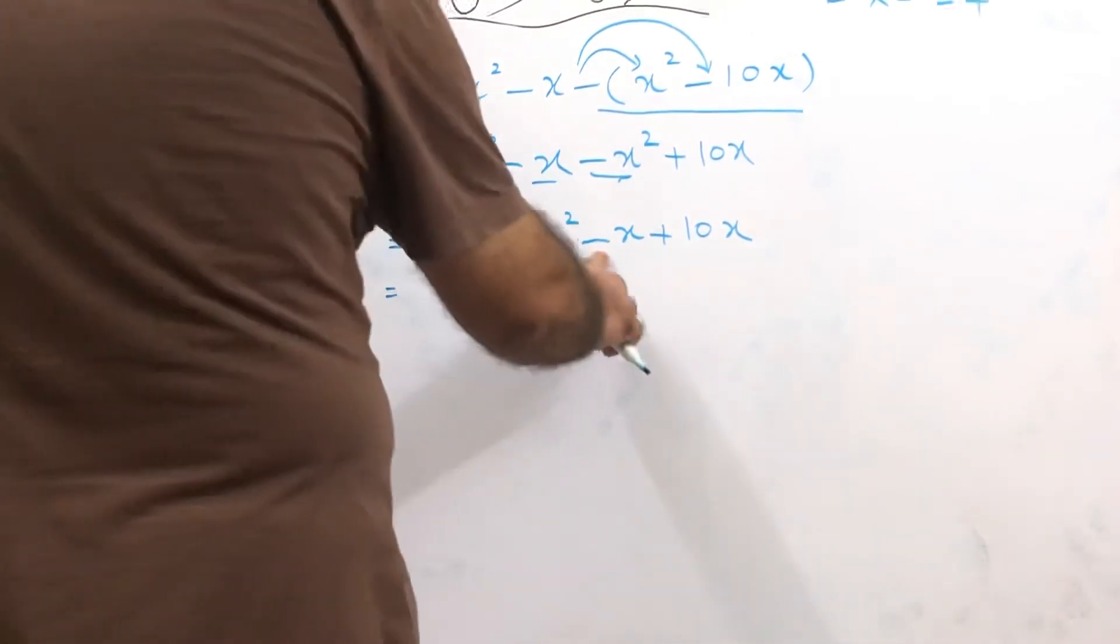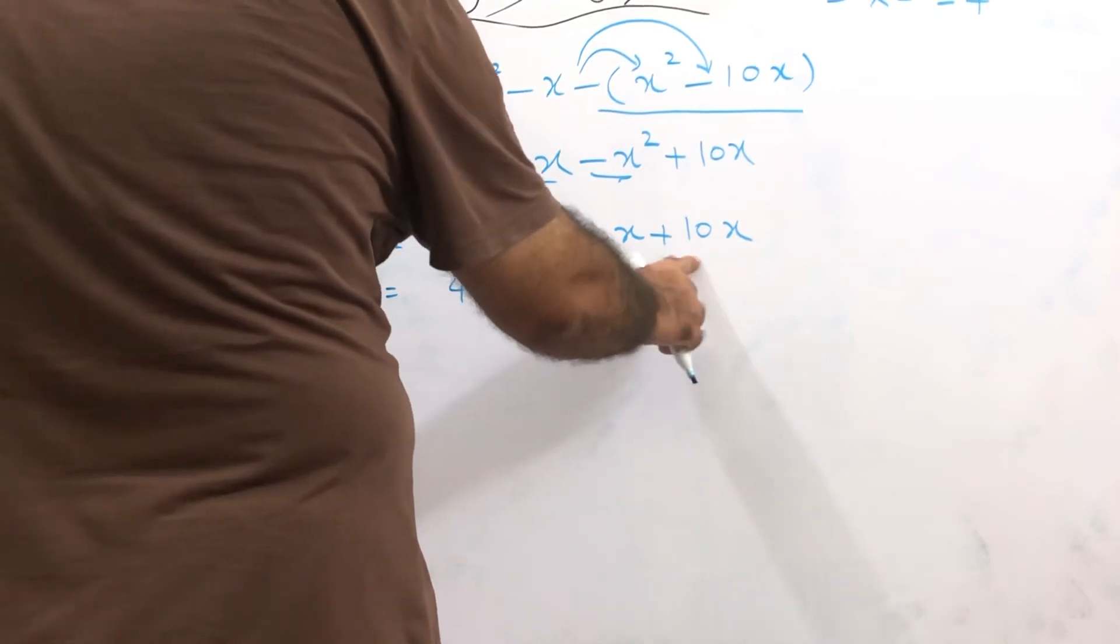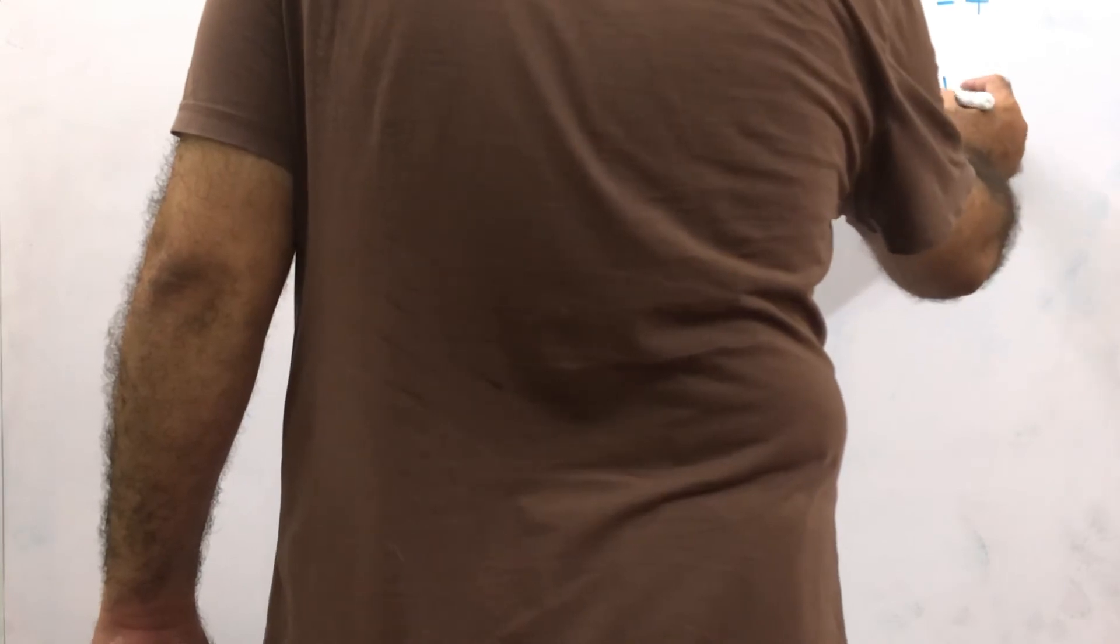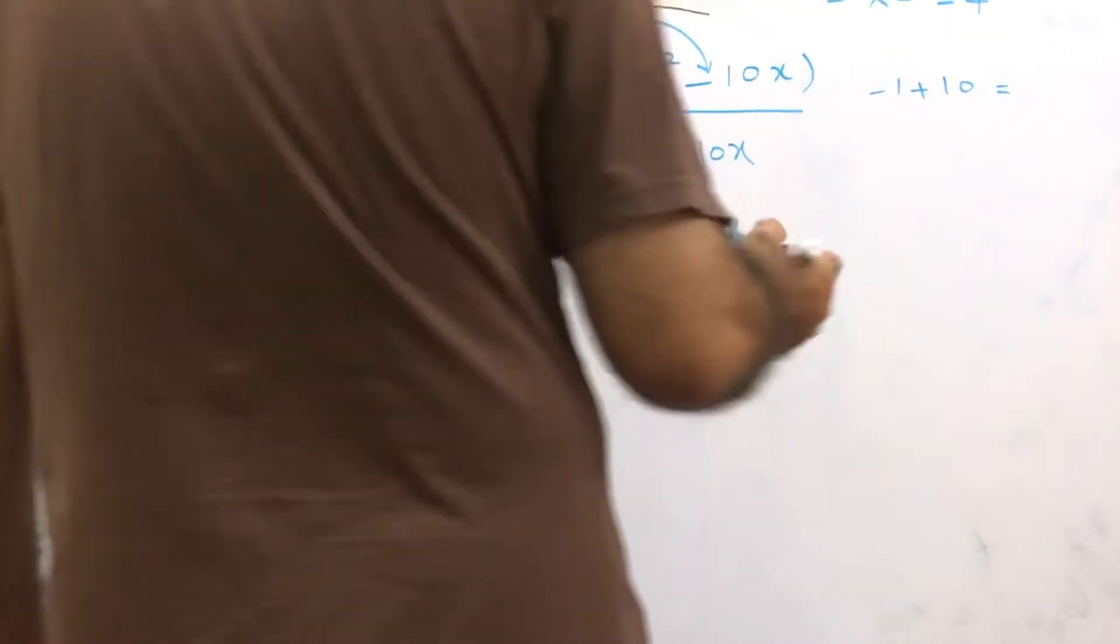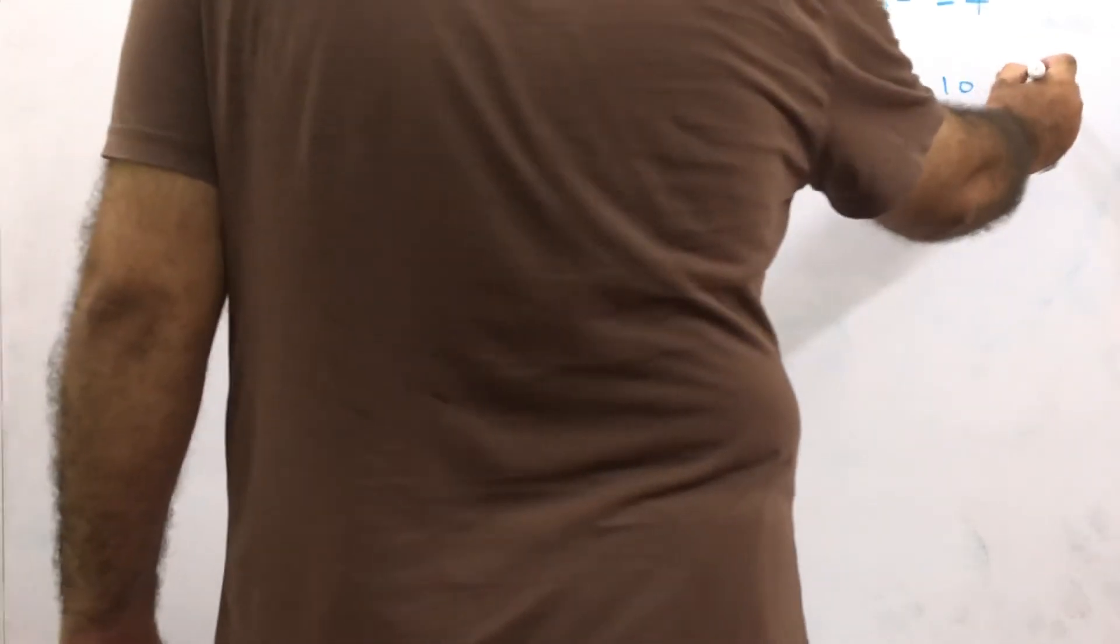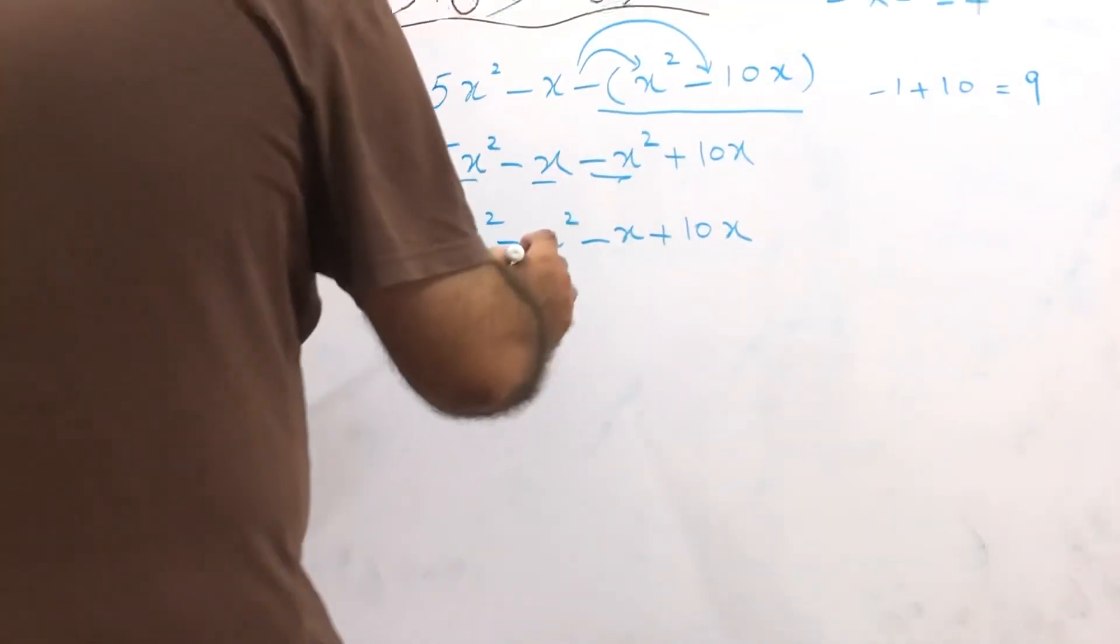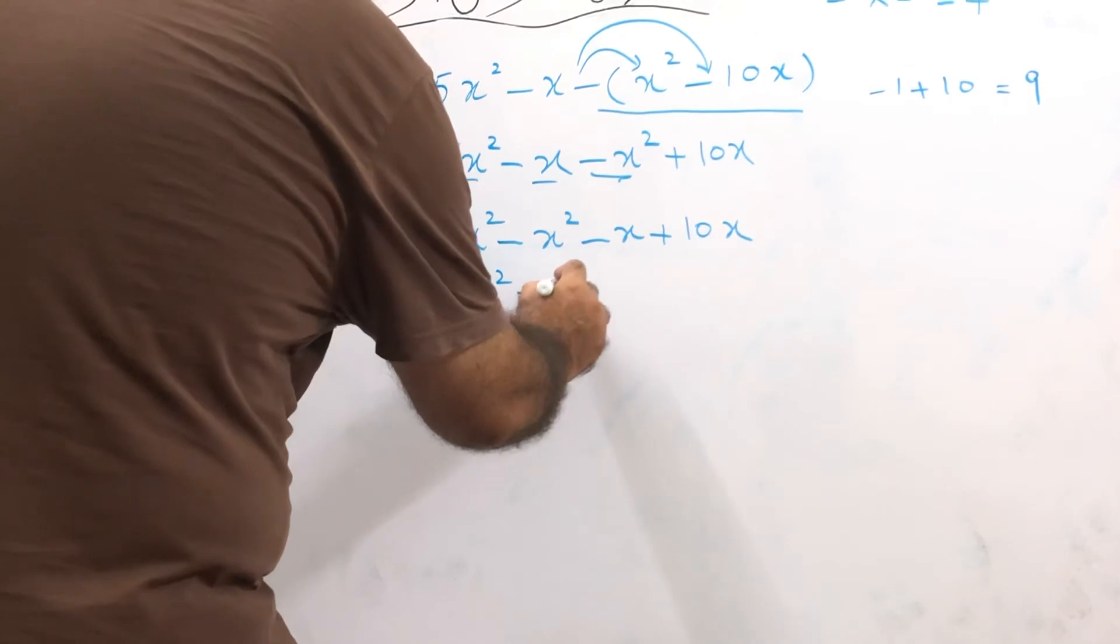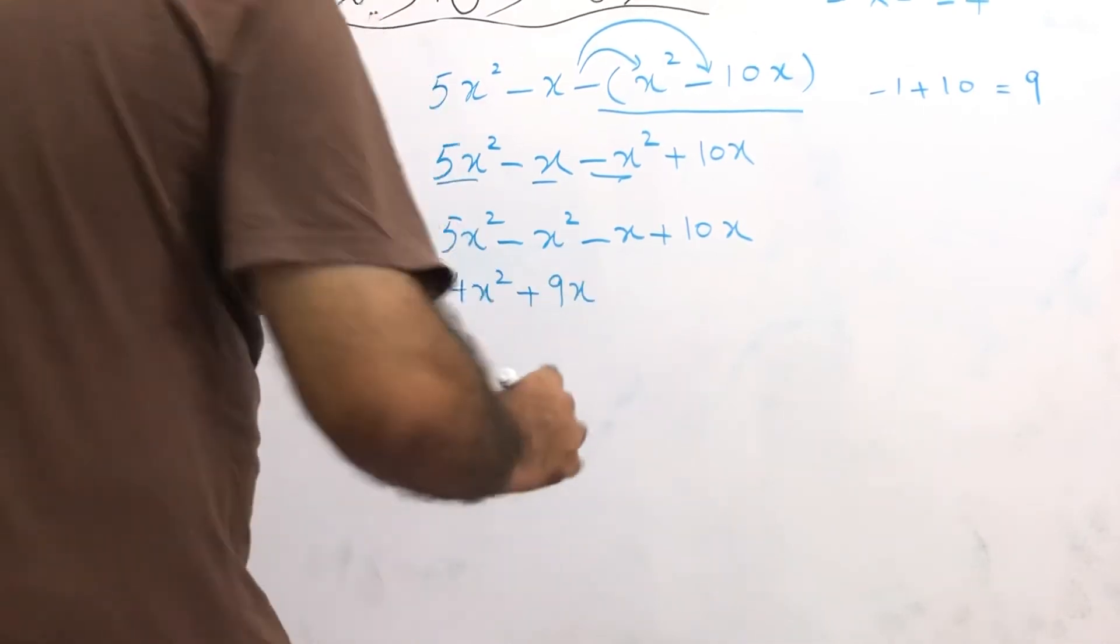This is minus x: minus 1 plus 10. How to solve is that you can say 10 minus 1 is 9, so it will be plus 9x.